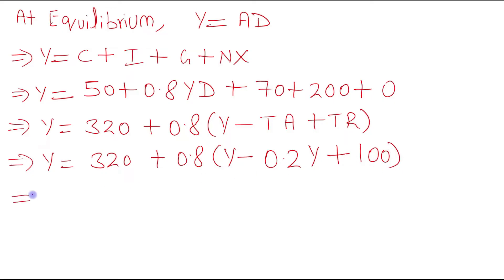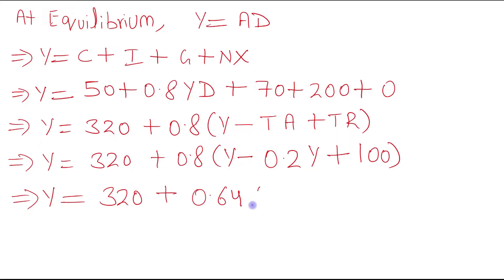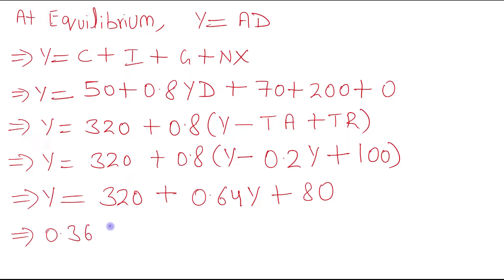Expanding: Y equals 320 plus 0.8 times (1 minus 0.2)Y plus 0.8 times 100. That gives 0.8 times 0.8Y which is 0.64Y plus 80. So Y minus 0.64Y equals 0.36Y equals 320 plus 80, which is 400.